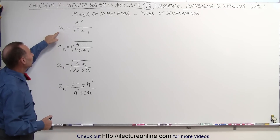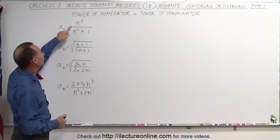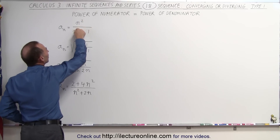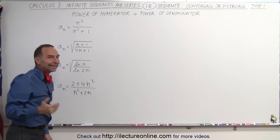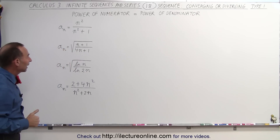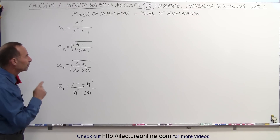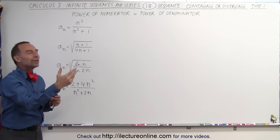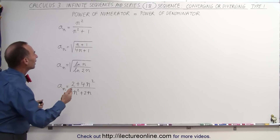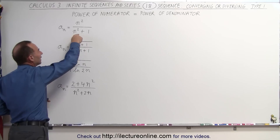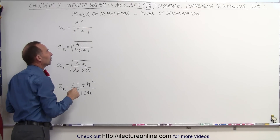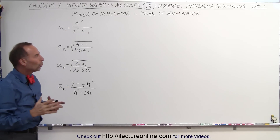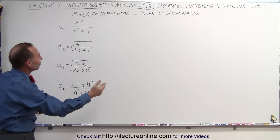Here we have a sequence expressed as a formula: a sub n equals n squared divided by n squared plus 1. When we look at the powers of n in the numerator and the denominator, if they're equal to one another, then the sequence will converge. If the powers are equal, we look at the coefficients in front of those n terms to determine the final infinite value of that sequence.